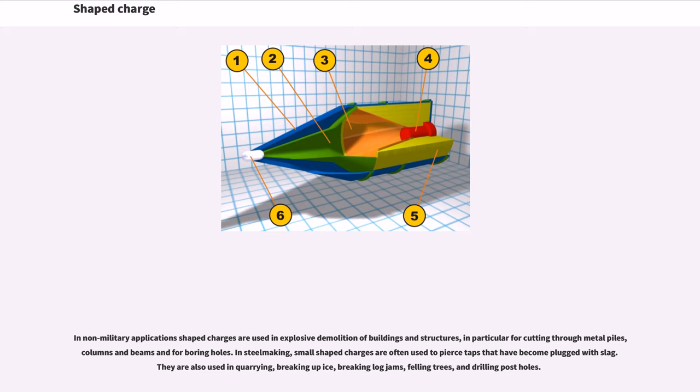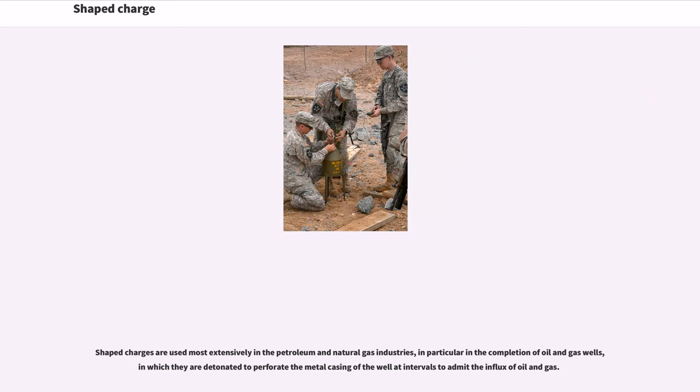In steelmaking, small shaped charges are often used to pierce taps that have become plugged with slag. They are also used in quarrying, breaking up ice, breaking log jams, felling trees, and drilling post holes. Shaped charges are used most extensively in the petroleum and natural gas industries, in particular in the completion of oil and gas wells, in which they are detonated to perforate the metal casing of the well at intervals to admit the influx of oil and gas.